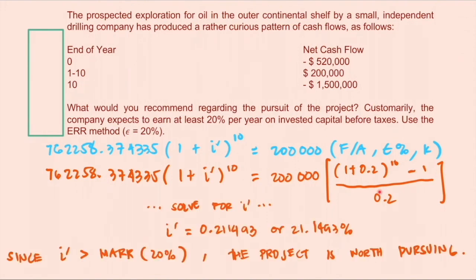With this equation we can solve for the value of i which is equivalent to 21.1493%. The MARR is equivalent to 20% and since our ERR is greater than MARR then we can conclude that the project is worth pursuing and it is economically justified.